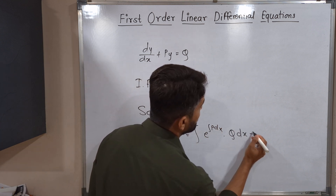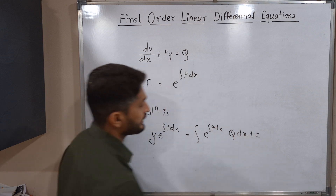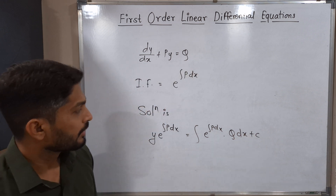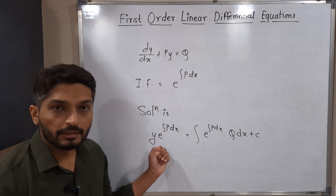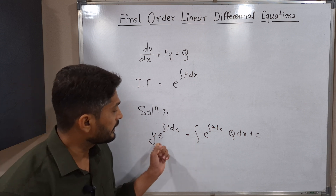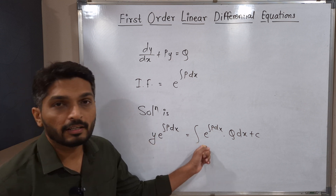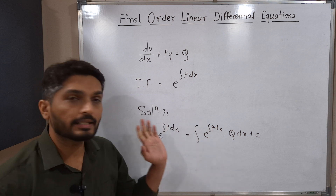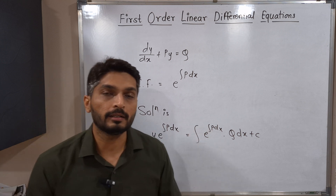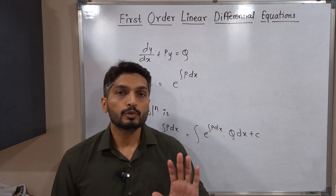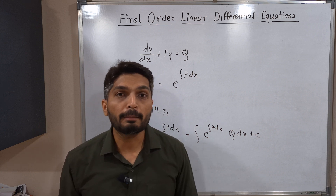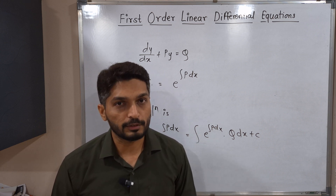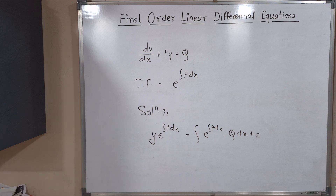The second step is the solution. Once you have the integrating factor, the solution is directly: y · e^(∫P dx) = ∫ e^(∫P dx) · Q dx + C. On the left-hand side you use the integrating factor you already found. On the right-hand side you solve this integration to get the final answer. That's it! In the next video I'm going to cover one problem based on this. Make a screenshot of the formula, then we'll stop. Thank you, see you in the next video.